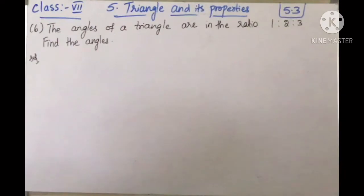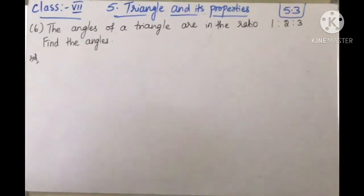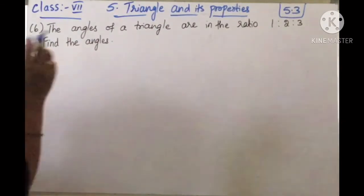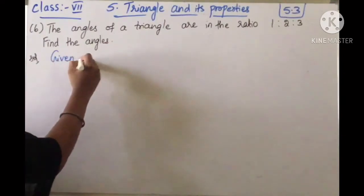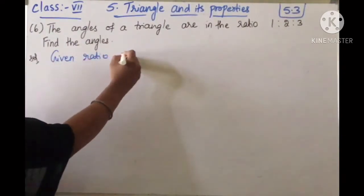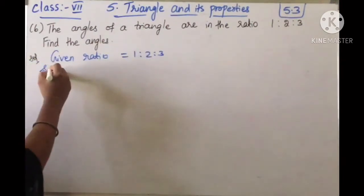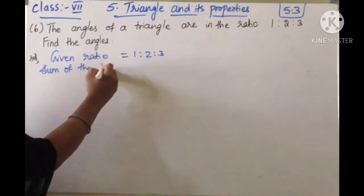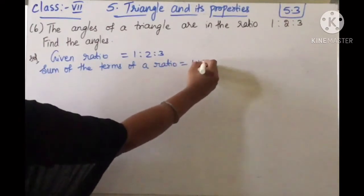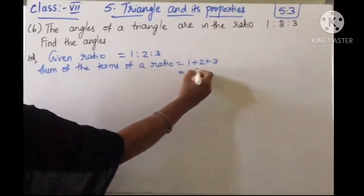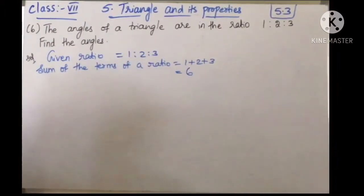Coming to the 6th question: the angles of a triangle are in the ratio 1:2:3. Find the angles. The angle sum property states that the sum of the angles in a triangle is 180 degrees. The given ratio is 1:2:3. We need to find the sum of the terms of the ratio, that is 1 plus 2 plus 3, which equals 6.